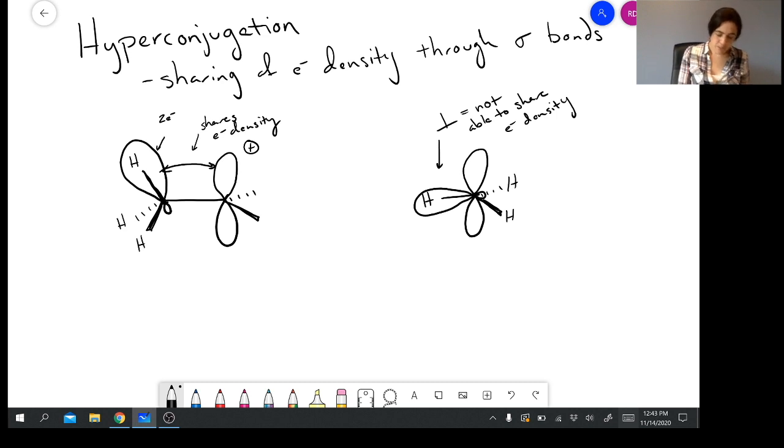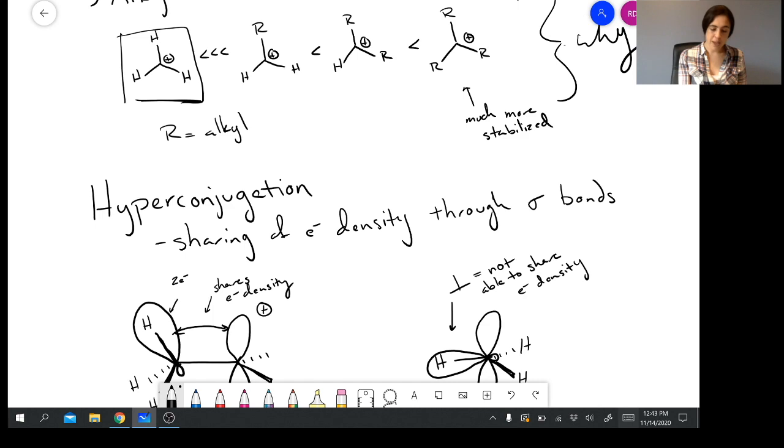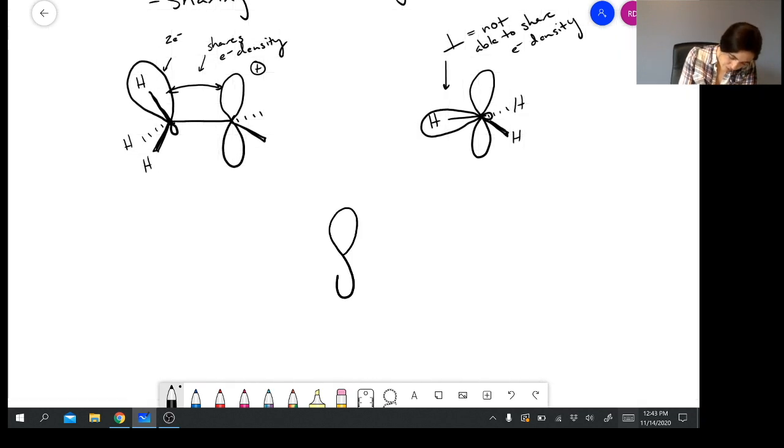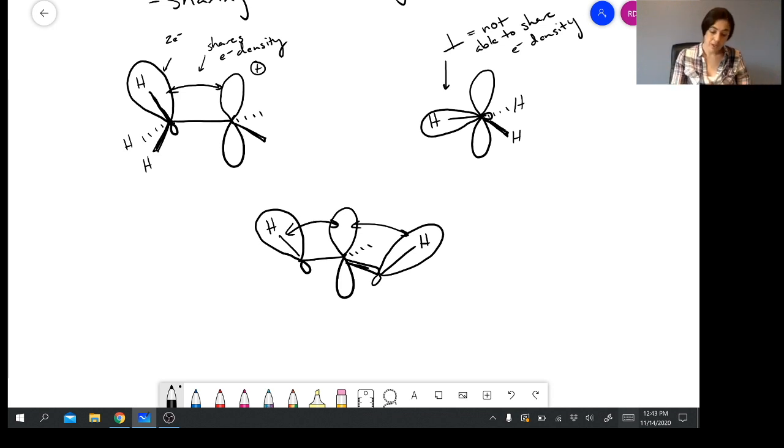Now, we've shown one example of this here, but keep in mind that our trend shows that the more alkyl groups we have, the more stabilized the carbocation is. This is because if we think about hyperconjugation, it doesn't have to happen with one hydrogen at a time. You can share from here. You can also share from all of the adjacent carbons, any CH or CC bond. You could actually also consider doing this with another carbon here.